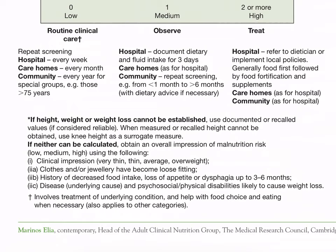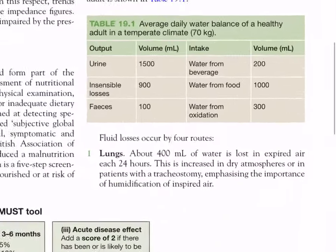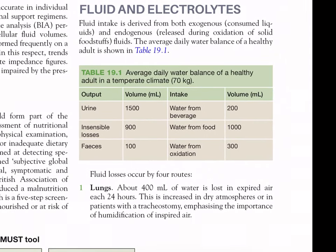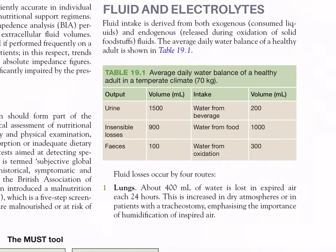Fluid and electrolytes: fluid intake is derived from both exogenous consumed liquids and endogenous release during oxidation of solid foodstuffs. Table 19.1 shows the average daily water balance of a healthy adult in a temperate climate. Output includes urine (1500 ml), insensible losses (900 ml), and feces (100 ml). Intake includes beverages (200 ml), water from food (1000 ml), and water from oxidation (300 ml).